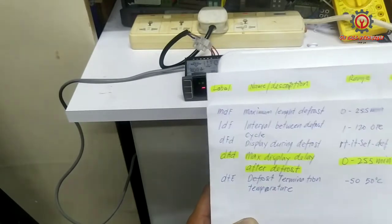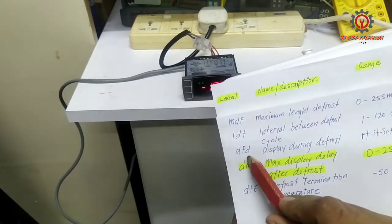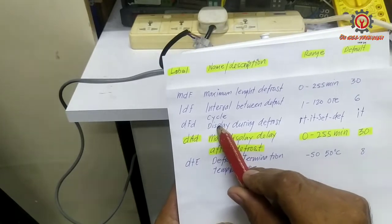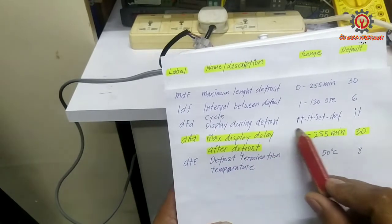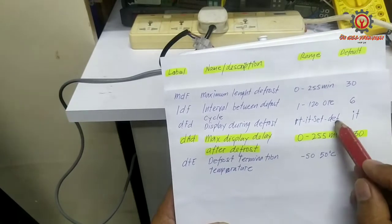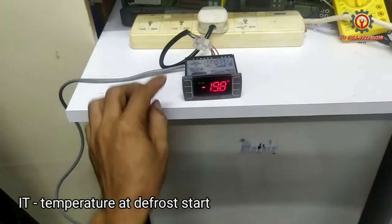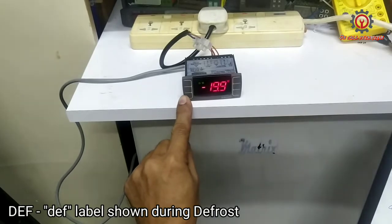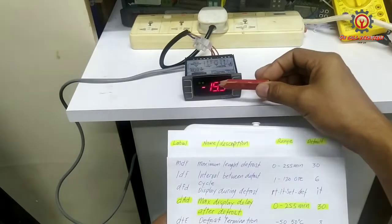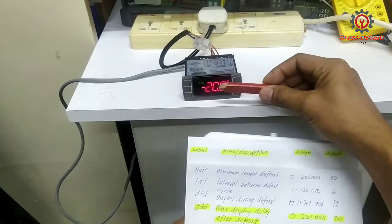When you choose the DFD, which is the cycle displaying during defrost, we have a default of IT. But I choose DF, meaning when this machine defrosts, DF will appear here instead of IT.